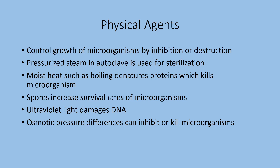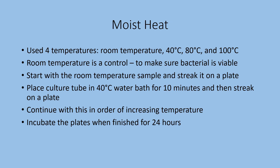Ultraviolet light is another example of a physical agent. It tends to destroy or damage the DNA. And then something else is changing the osmotic pressure. When you alter the osmotic pressure of the solution that an organism is in, that can also inhibit or kill the microorganisms. So we're going to briefly look at these.